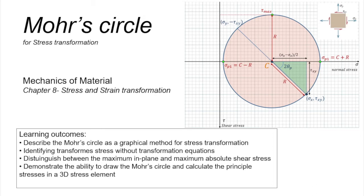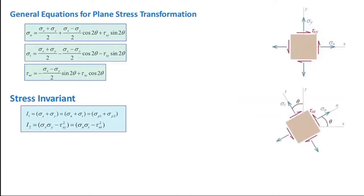Let's review the equations developed in the previous lecture. If the state of stress at any point is given with x and y axes, and we rotate that stress element by an arbitrary angle theta, the magnitude of normal stresses and shear stresses can be determined from these equations. Sigma n, sigma t, and tau nt can be calculated based on stresses in the original plane as well as the angle of rotation theta.